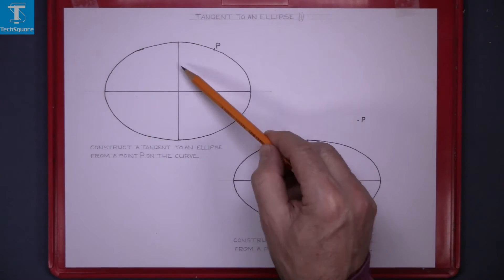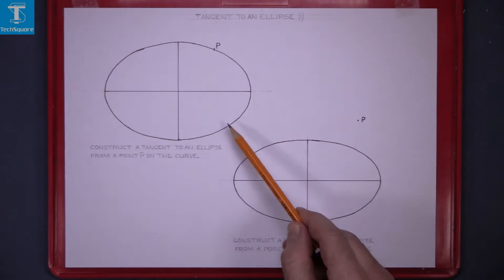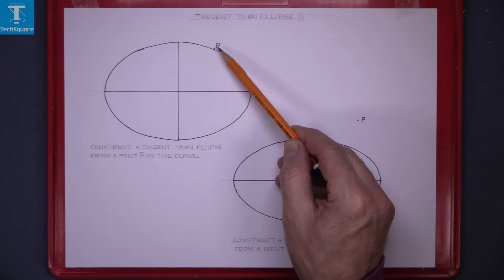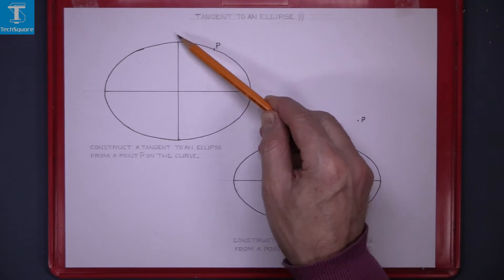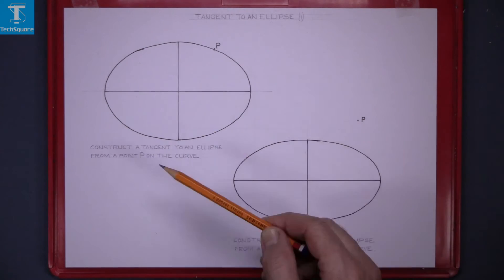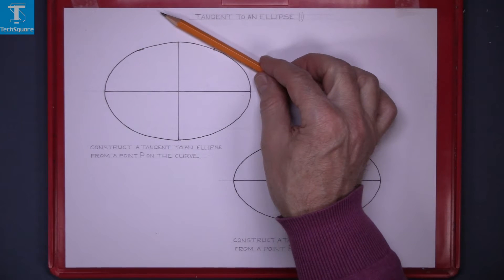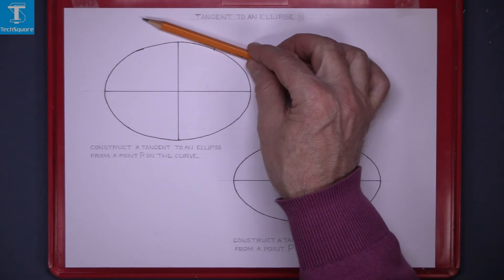Given the ellipse, given the major and minor axis and a point P on the curve, we are asked to draw a tangent to the ellipse at point P. A tangent is a line that will touch the ellipse at one point.